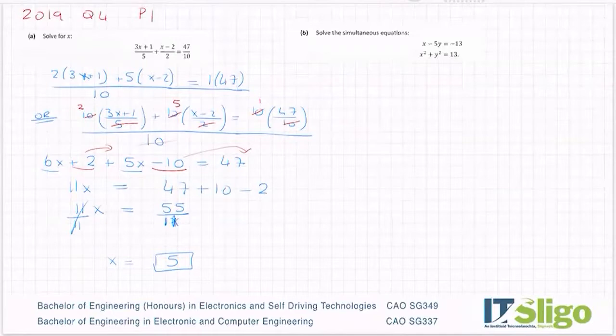Solve the simultaneous equations. This is quite like the one we did for the 2017 paper. You take the first equation and you write it in terms of a letter. So this is your linear equation.